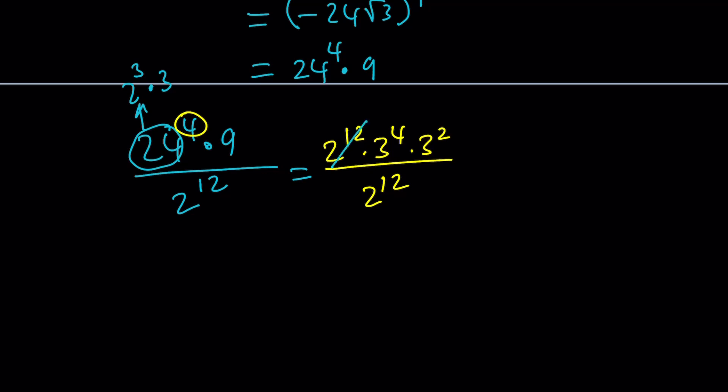2 to the power conveniently cancels out. Leaving us with 3 to the 6th power. And that's just 3 to the third squared. Which is 27 squared. Which is 729. Or you just memorized it. And you know it's 729. Yay! The answer is a positive integer. And that's just awesome.